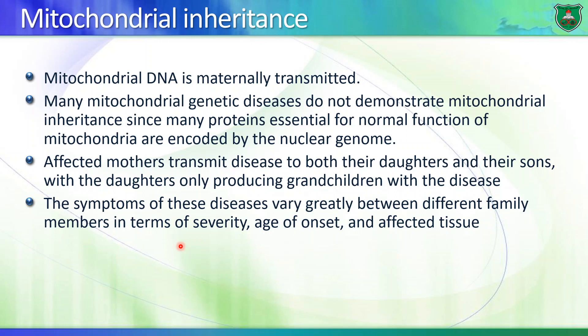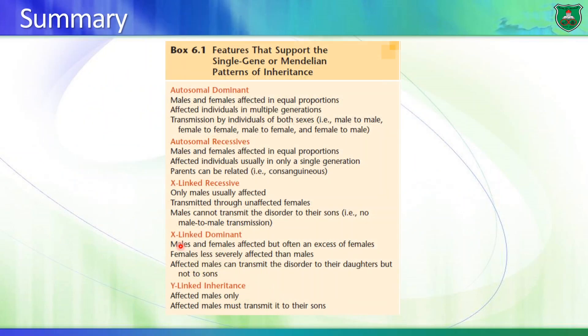This is a summary of the different features of single-gene disorders and Mendelian patterns of inheritance. Read these features and look at the pedigrees — you should be able to distinguish these disorders according to their pedigrees. There are other modes of inheritance as well, including mosaicism, uniparental disomy, and imprinting.